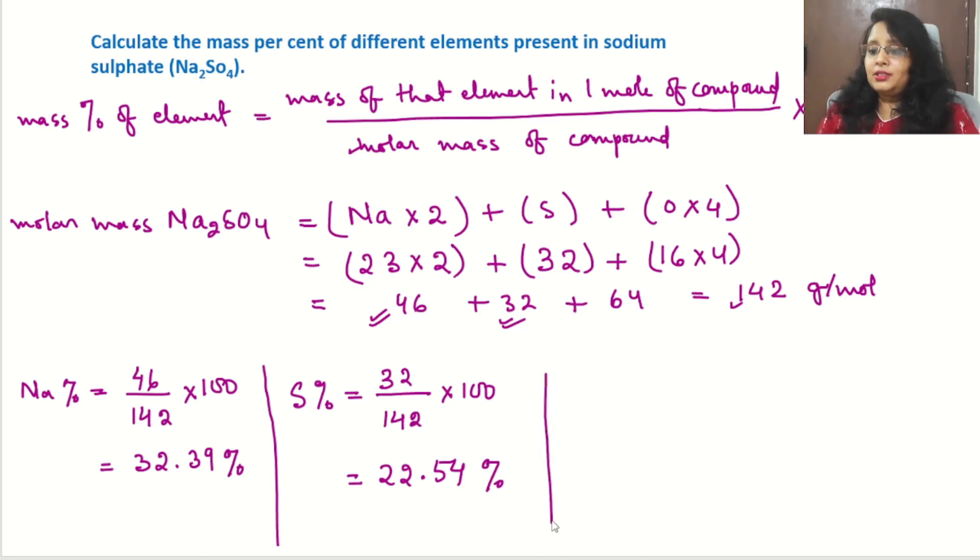Now next is oxygen. Mass percent of oxygen in the sodium sulfate compound: mass of oxygen in one mole is 64 grams, divided by molar mass 142 grams, multiplied by 100 according to the mass percent formula. And we will get the answer: 45.07%.